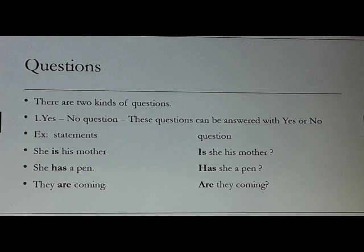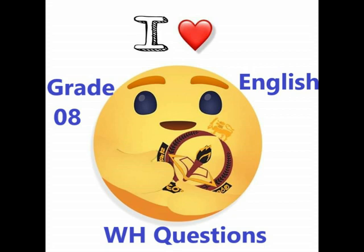You can also use modal verbs such as should and will. The structure is: WH word, then modal or helping verb, then subject, then main verb. For example: 'What should I do?' and 'When will you arrive?' Now try putting it together. Turn to page number 52, activity 5.3.